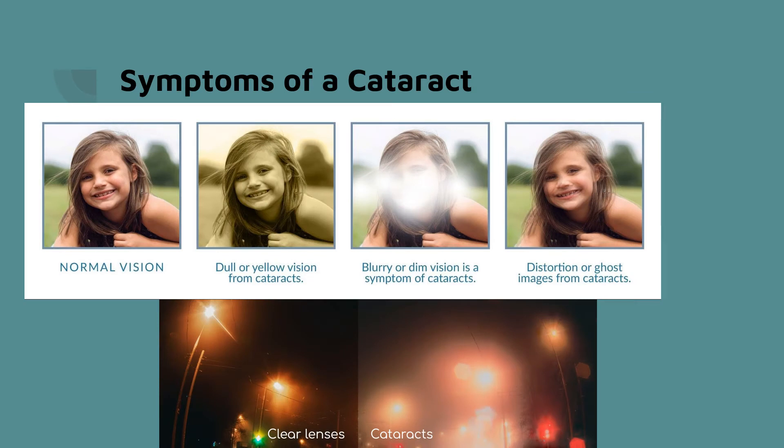How can we tell if we have a cataract? Commonly, people feel like their vision is very blurry. People will have a hard time seeing at night, usually due to glare coming off of other drivers' headlights. Additionally, images can look as if they're dull or even becoming yellow.